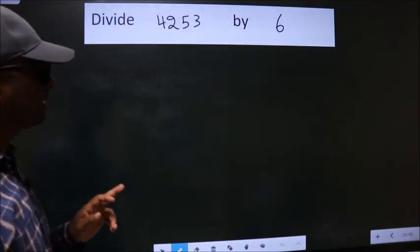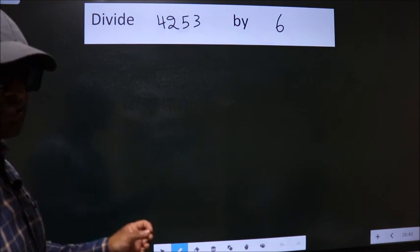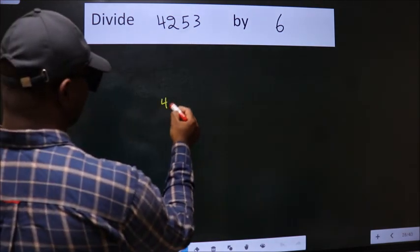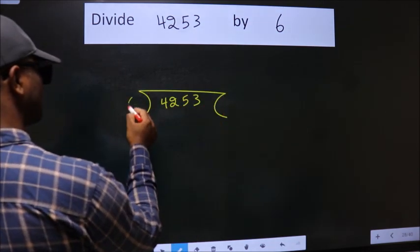Divide 4253 by 6. To do this division, we should frame it in this way: 4253 here, 6 here.